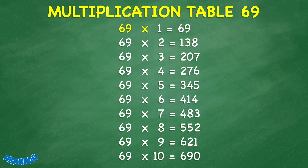69 times 1 equals 69. 69 times 2 equals 138. 69 times 3 equals 207. 69 times 4 equals 276. 69 times 5 equals 345.